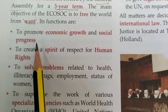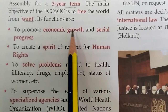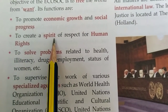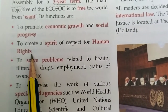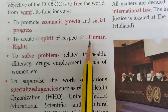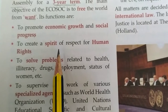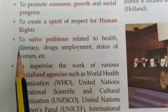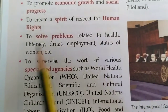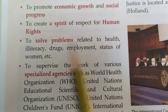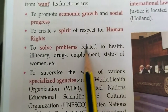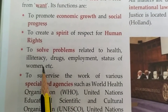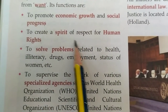One of the functions of the Economic and Social Council is to promote economic growth — to make the country develop — and social progress. The next objective is to create a spirit of respect for human rights, so every citizen should have all the basic human rights to live peacefully. It also aims to resolve problems related to health, illiteracy, drugs, employment, status of women, etc. — important issues every country faces, and their main objective is to solve these problems for member countries.